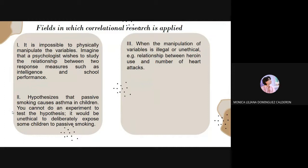Now we have fields in which correlational research is applied. The first one is when it is impossible to physically manipulate the variables. Imagine that a psychologist wishes to study the relationship between measures such as intelligence and school performance. Intelligence is an individual characteristic, a trait that is defined based on a performance on a standardized test and cannot be physically manipulated.